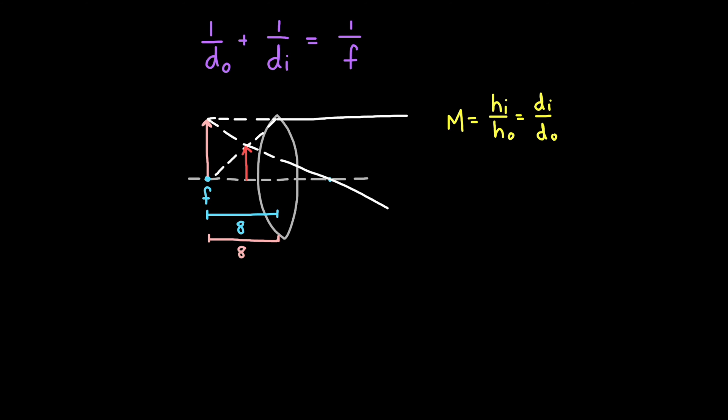To find the object distance, we use the thin lens equation. If we plug negative 8 cm into the image distance, 8 cm into the focal length, and do some algebra magic, we find that the object distance is 4 cm. Now we have enough information to find the magnification. So if I plug this into my magnification formula, I get negative negative 8 4ths, so just 8 4ths is equal to 2.